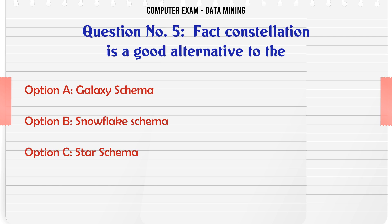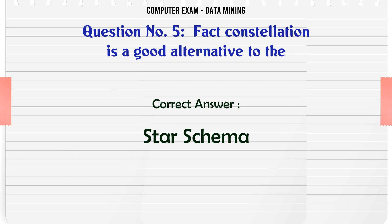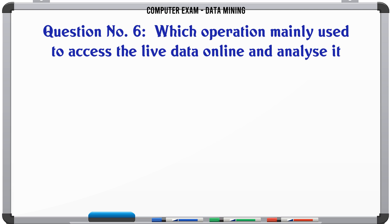Fact constellation is a good alternative to the: A. Galaxy Schema. B. Snowflake Schema. C. Star Schema. D. None of the above. The correct answer is Star Schema.